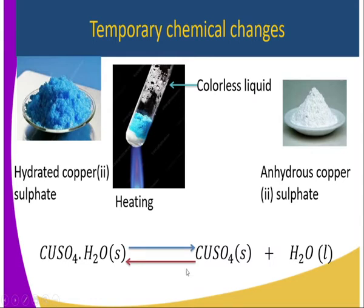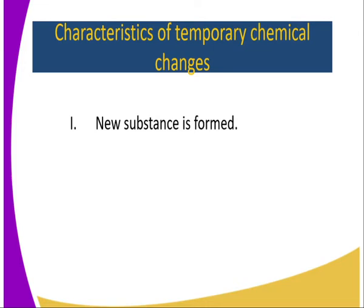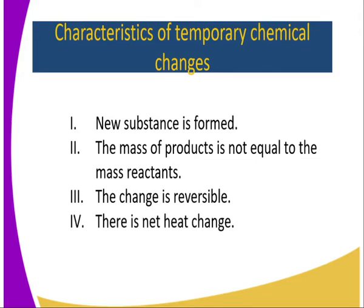On cooling, if we add the liquid back to the anhydrous copper(II) sulfate, it goes back to hydrated copper(II) sulfate. What are the characteristics of this change? One, a new substance is formed — anhydrous copper(II) sulfate gives us hydrated copper(II) sulfate. Two, the mass of products is not equal, so there is change in mass, since the water of crystallization has been lost. Three, the change is reversible — if we add the water of crystallization back, this gives us hydrated copper(II) sulfate again. Four, there is a net heat change, meaning the process is either exothermic or endothermic.